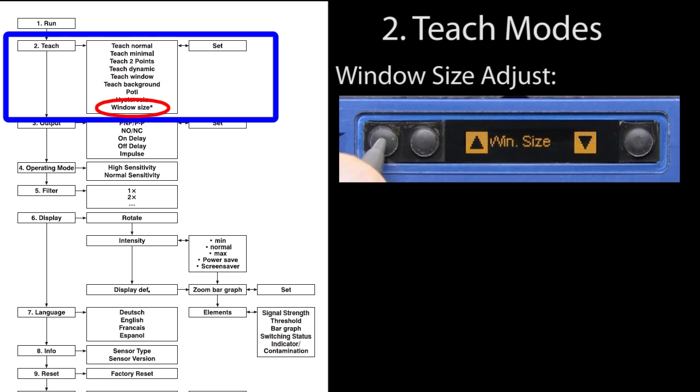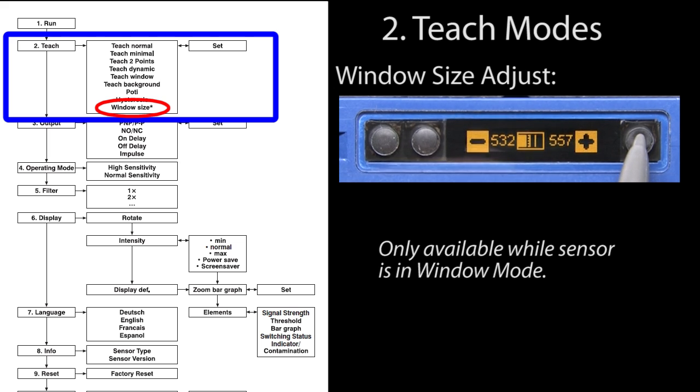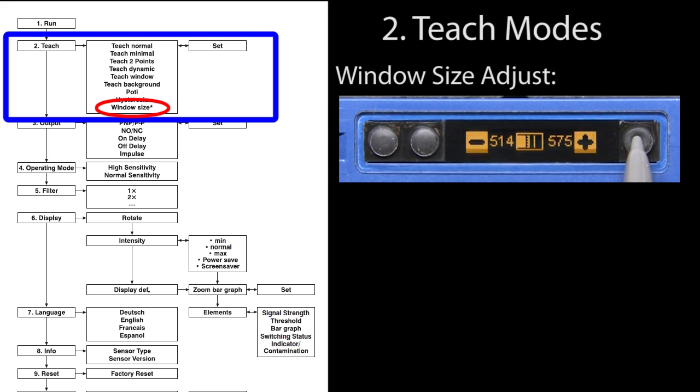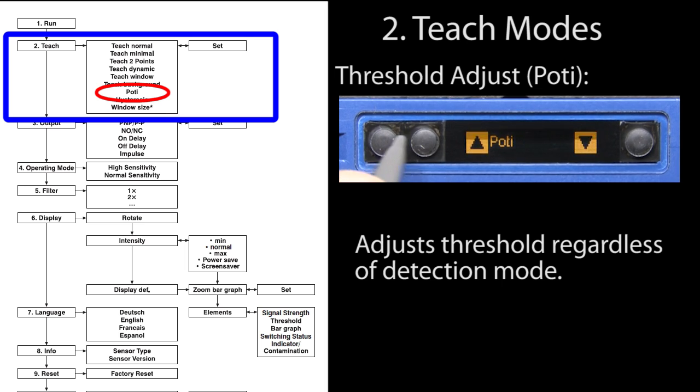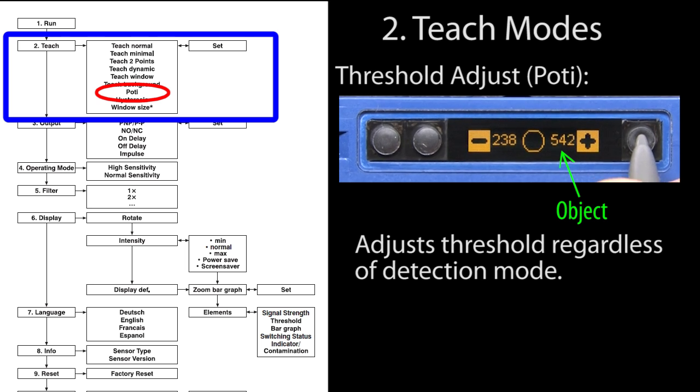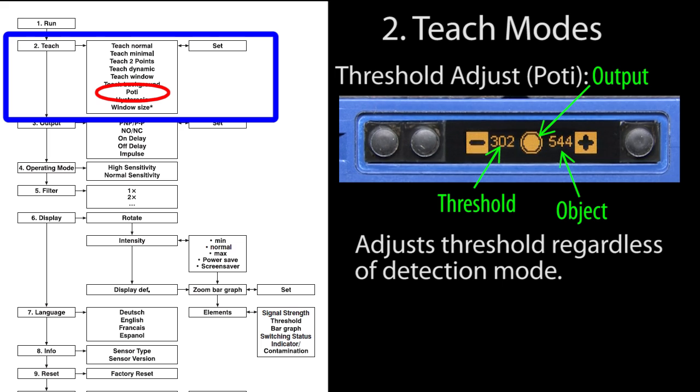You can adjust the size of that window in the window size menu. The window width is currently set to these two values. Just use the plus and minus keys to make it bigger or smaller. You can also move the center of the window or any teach threshold with the potentiometer menu. This number tells you where the current object is. This number is the threshold. Use the plus and minus keys to move that threshold around.